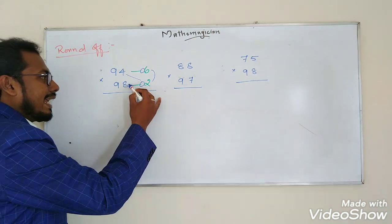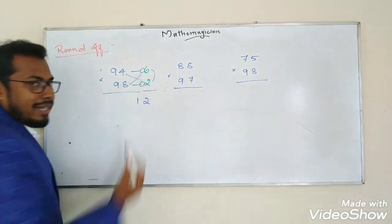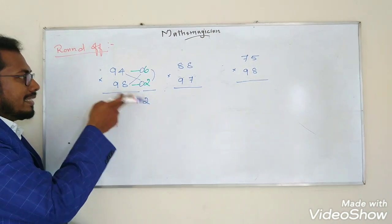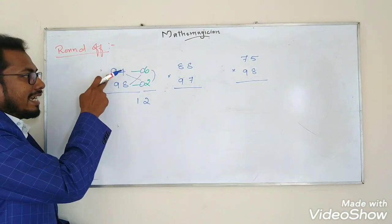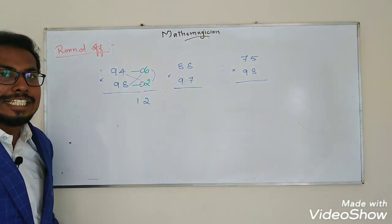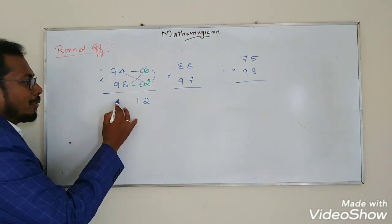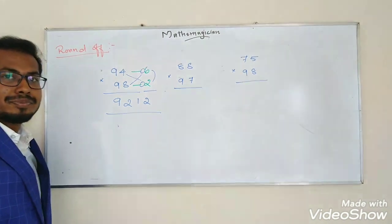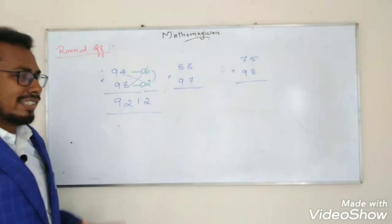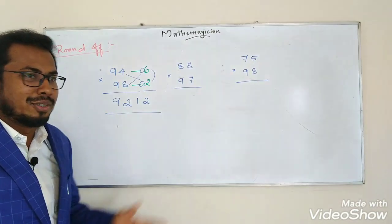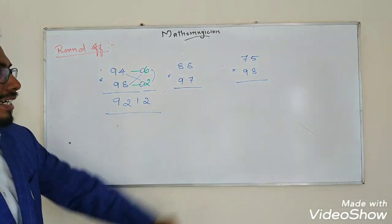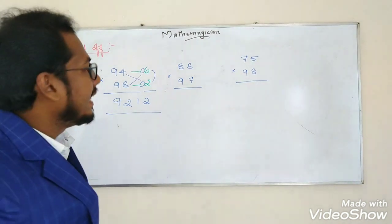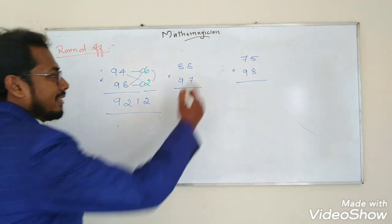So 94 minus 2 equals 92. That gives us 9212 as the intermediate step. Next example: 88 times 97, close to 100. 100 minus 3 is 97, and 100 minus 12 is 88.